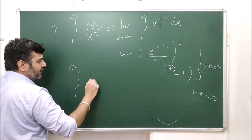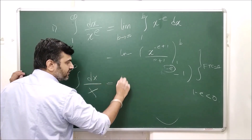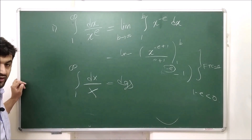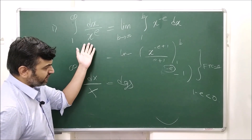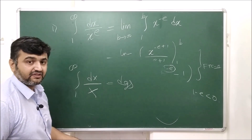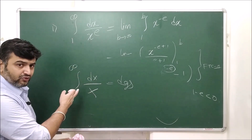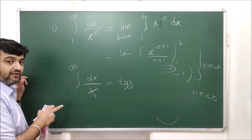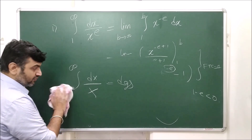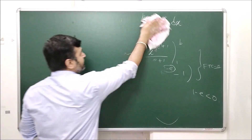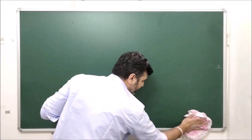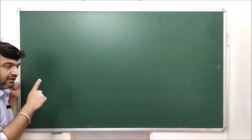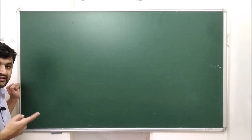Improper integrals don't always converge. For example, the integral from 1 to ∞ of dx/x will diverge — the answer will be positive infinity. This is a homework problem: try to solve it and tell me whether the answer is +∞ or −∞. Pause the video, solve it, and comment your answer.